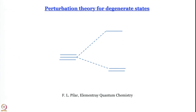You can think of examples such as the Zeeman effect or the Stark effect — application of a magnetic field or an electric field — which changes the energies of orbitals that were earlier degenerate in such a way that they are no longer degenerate. This is one important reason why we must acquaint ourselves with perturbation theory of degenerate states.